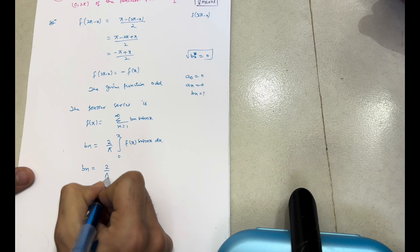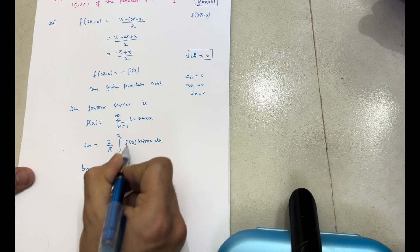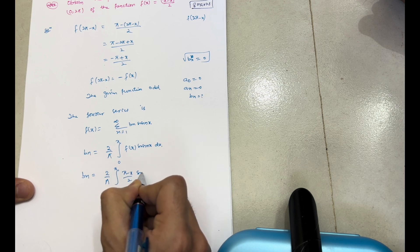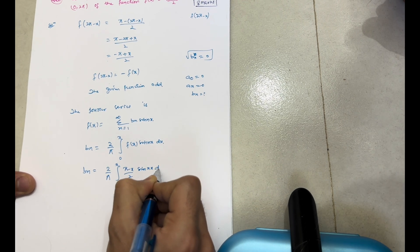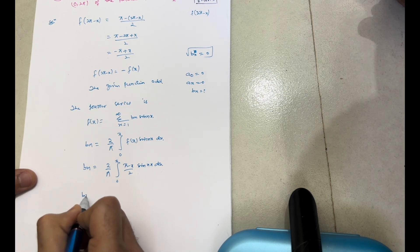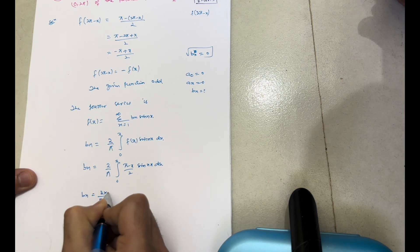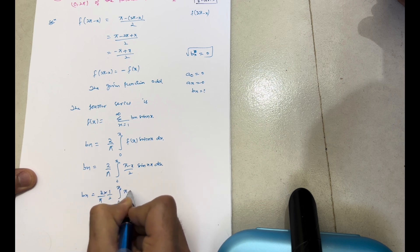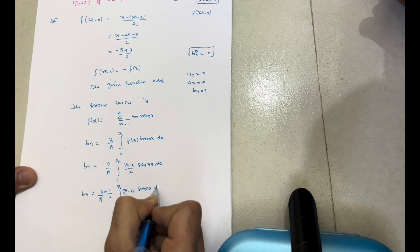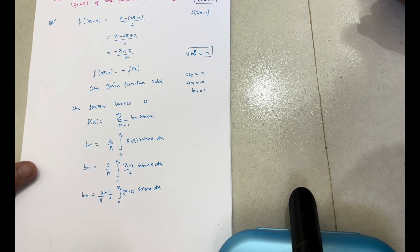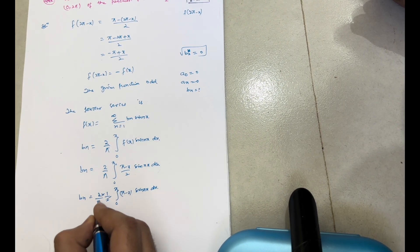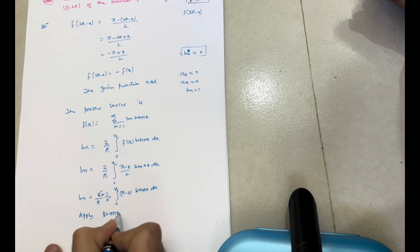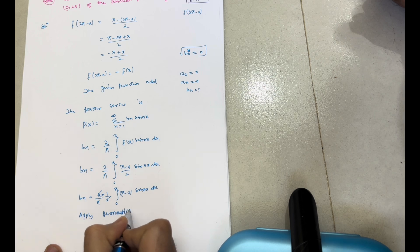Putting in the values: bn = (2/π) × ∫₀^π [(π - x)/2] sin(nx) dx. Taking the factor of 2 out from the denominator gives bn = (2/π) × (1/2) × ∫₀^π (π - x) sin(nx) dx. The 2s cancel, and now it is time to apply Bernoulli's rule of integration.